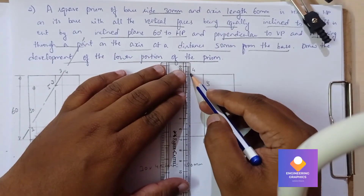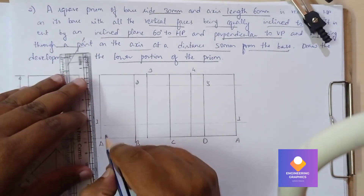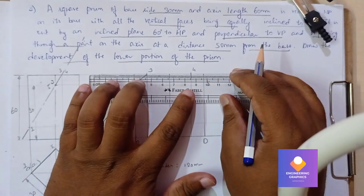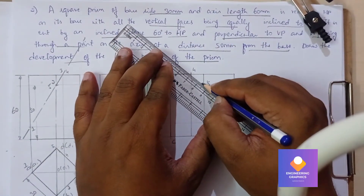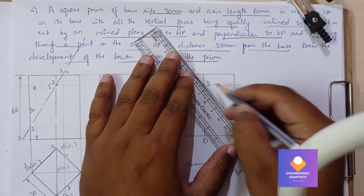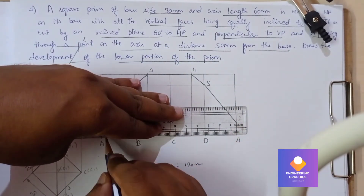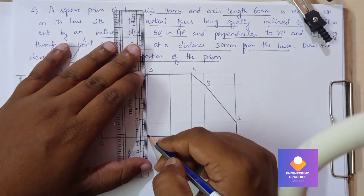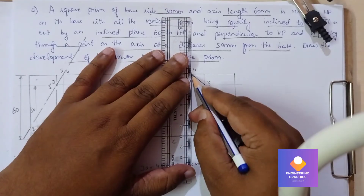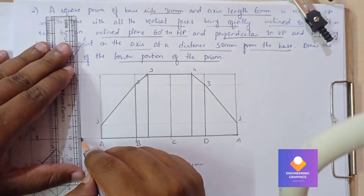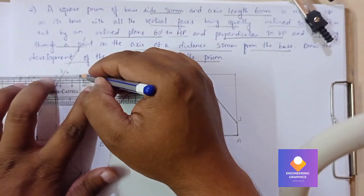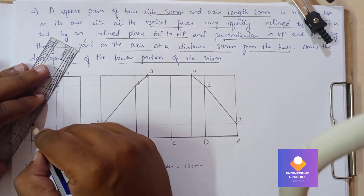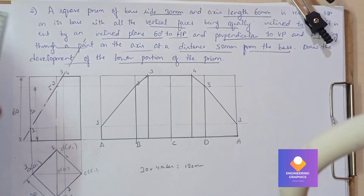Join all these points and draw a vertical line. Dark the lines at all the points exactly where we are getting them, joining with a straight line using a scale. Dark all the edges — this gives the development of the lower portion of the prism, the cut portion. Dark the vertical edges and in the front view also dark the cut and retained portions. That completes the development of the square prism. Thank you.